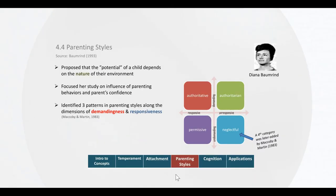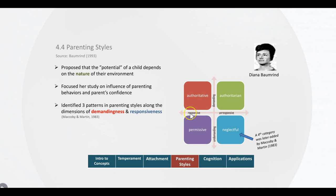To understand parenting styles, it's important to look at two variables: how responsive a parent may be to the child's needs versus how unresponsive the parent may be, and the degree of expectations that parents may have. We consider authoritative parenting to be the ideal type because this parent has high expectations but provides a lot of support, with neglectful parenting being the more problematic.